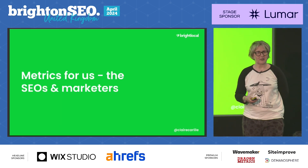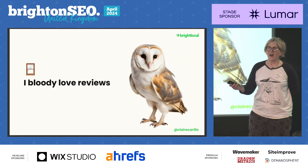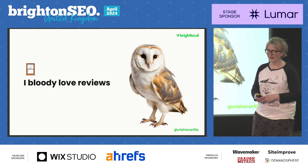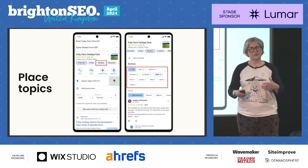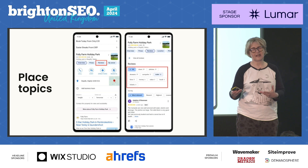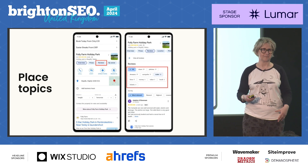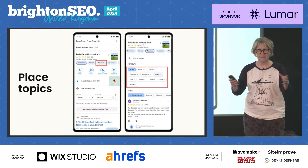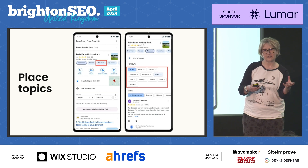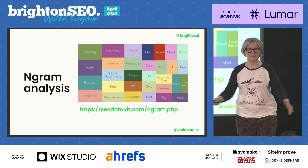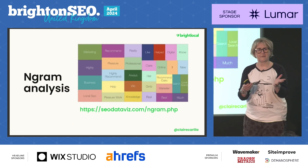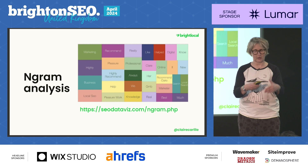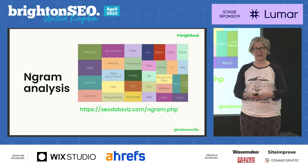Now let's look at the metrics for us — the local SEOs and the marketers. Reviews are like a window into the soul of the business. Once you get a certain number of reviews, Google puts together place topics based on the textual content of your reviews. You could also take the entire textual corpus of your reviews, run it through an n-gram analyzer, and that will surface topics and themes that come up over and over again — which is useful when we're working on improving products and services.